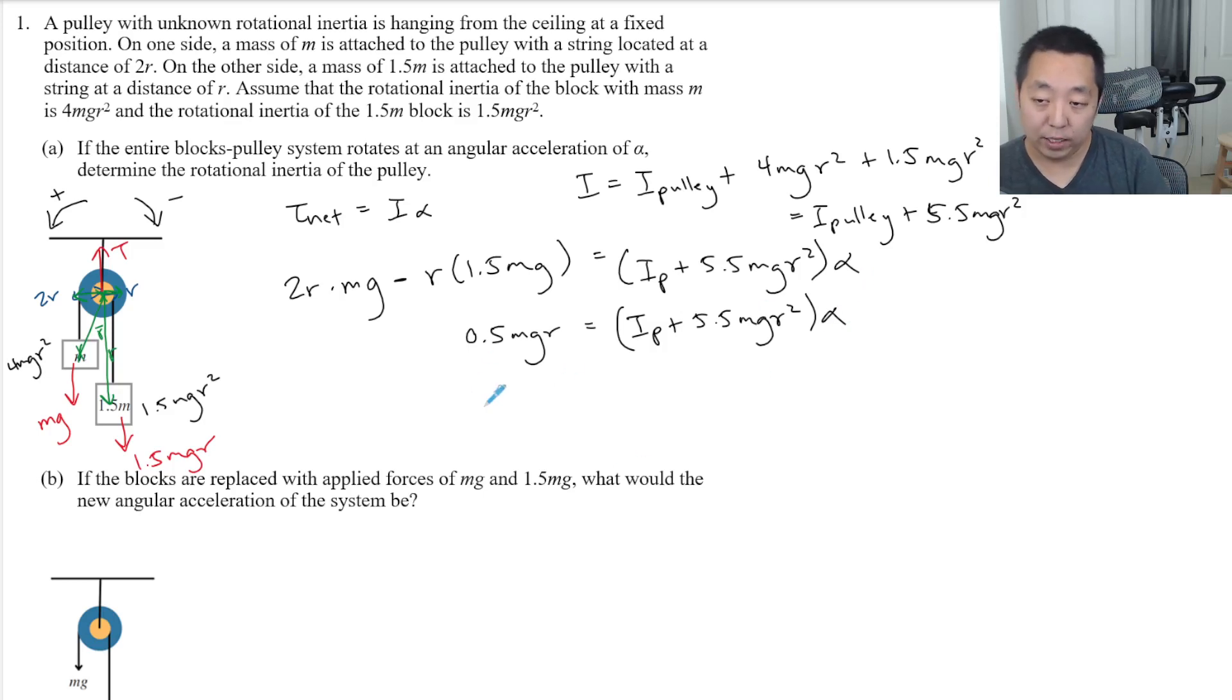And if you want to solve for I, I can divide by alpha, and then subtract the 5.5 MgR squared. And that would give me the I of the pulley.